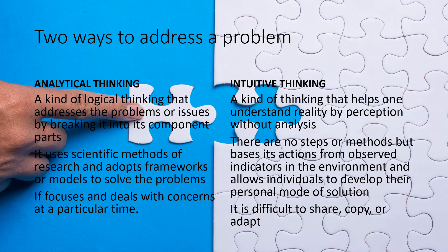There are two ways to address a problem. Analytical thinking is a kind of thinking that addresses problems or issues by breaking them into component parts. It uses scientific methods of research and adopts frameworks or models to solve problems, focusing on concerns at a particular time. Intuitive thinking is a kind of thinking that helps one understand reality by perception without analysis. There are no steps or methods, but it bases its actions from observed indicators in the environment and allows individuals to develop their personal mode of solution.